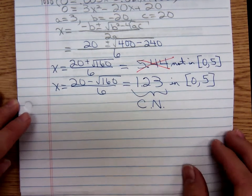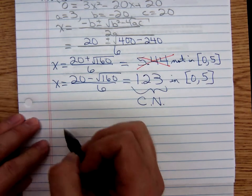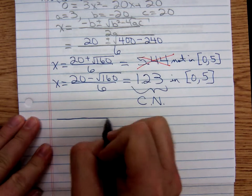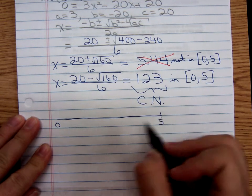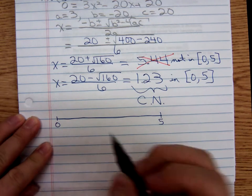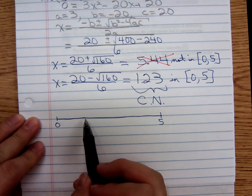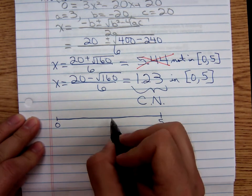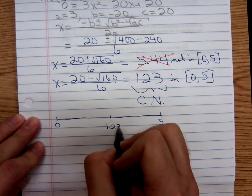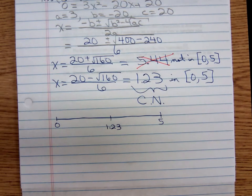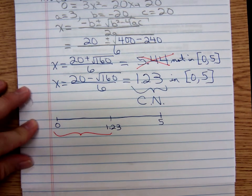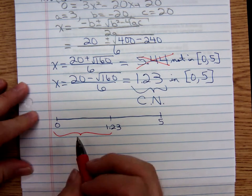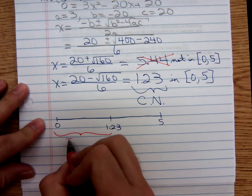Now I'm going to draw a number line continuing on to the first derivative test. I'm drawing the number line. Remember we're only looking from zero to five, and 1.23 would be over here closer to zero but I'm going to just put it right there in the middle so I have room to work. We're going to choose a number, first of all choose a number to the left of 1.23. The easy number to test I suppose is zero.